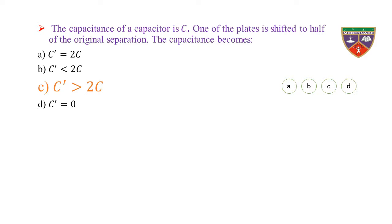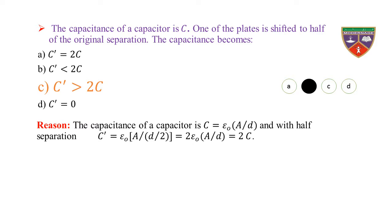The key is C' > 2C. Therefore, the correct option is C. Reason: The capacitance of a capacitor is C = ε₀A/D. With half separation, C' = ε₀A/(D/2) = 2ε₀A/D, where ε₀A/D = C. Therefore C' = 2C. Hence, the capacitance becomes C' = 2C.